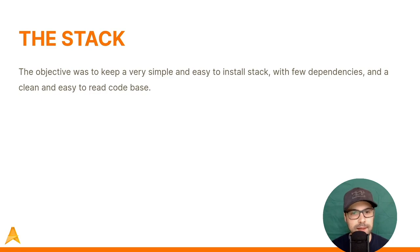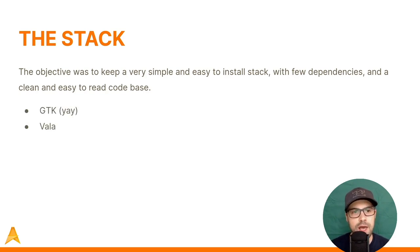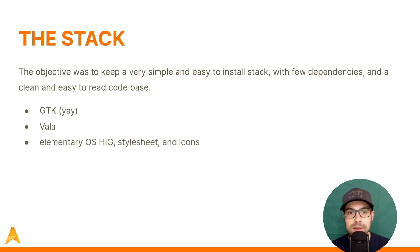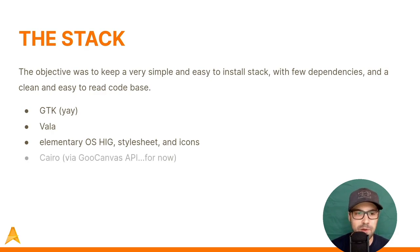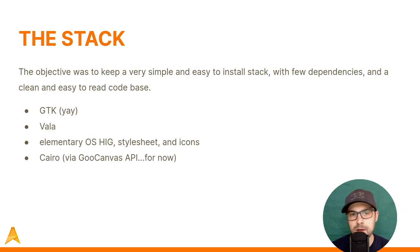I wanted to keep Akira simple — easy to compile, easy to build, easy to read, with few dependencies. Elementary stepped in and provided a very simple stack: GTK, Vala, Elementary OS's Human Interface Guidelines with stylesheets and icons, which were the most comprehensive and complete HIG available at the time. For graphics we're using Cairo as a graphics library via the GooCanvas API — we're probably getting rid of GooCanvas since it's a bit outdated, but Cairo is pretty standard and installed everywhere.